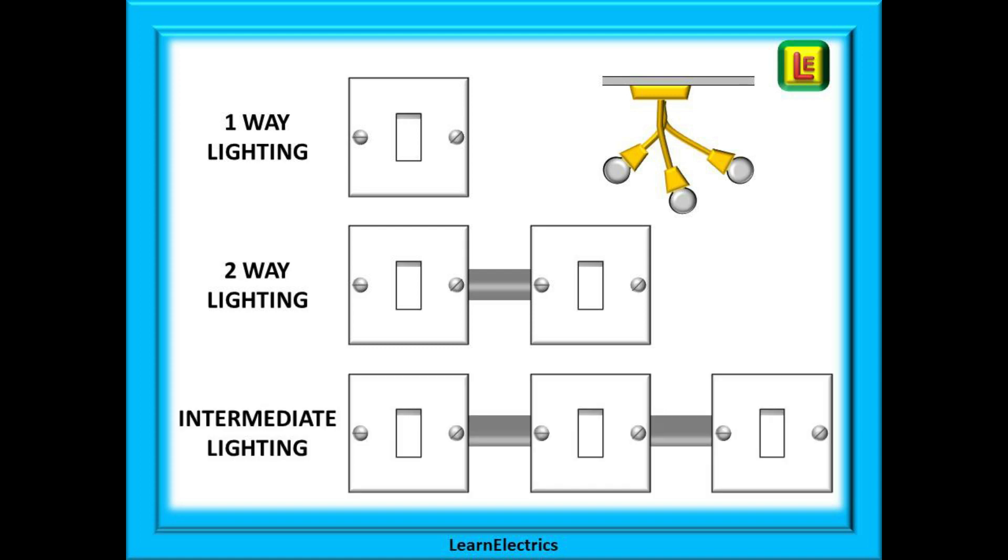And another video looks at intermediate switching. How do you make a light come on and go off from any one of three, four, five or more light switches. Useful in long corridors or rooms with several access doors.